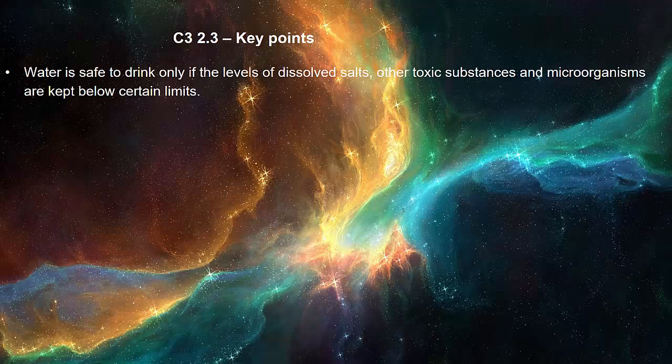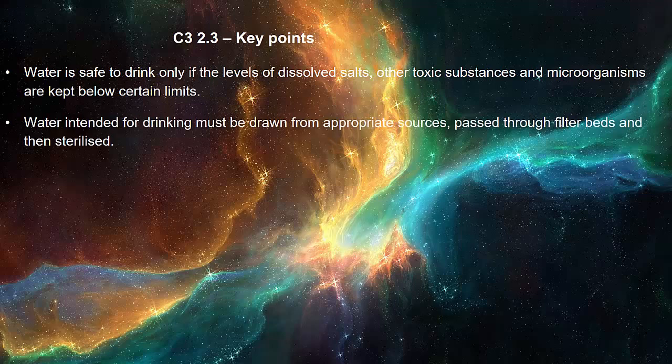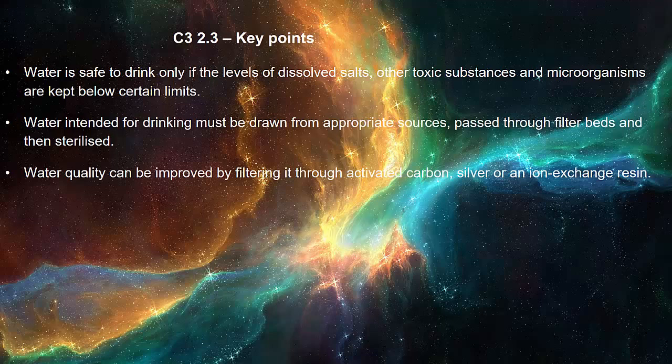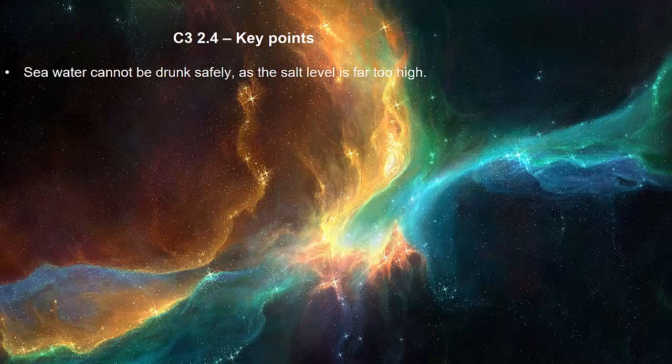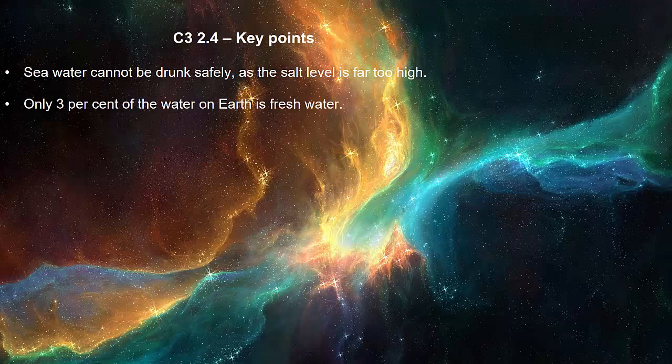Water is safe to drink only if the levels of dissolved salts, other toxic substances and microorganisms are kept below certain limits. Water intended for drinking must be drawn from appropriate sources, passed through filter beds and then sterilized. Water quality can be improved by filtering it through activated carbon, silver or an ion exchange resin. Seawater cannot be drunk safely as the salt level is far too high. Only 3% of the water on earth is fresh water.